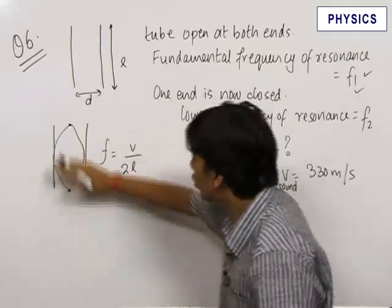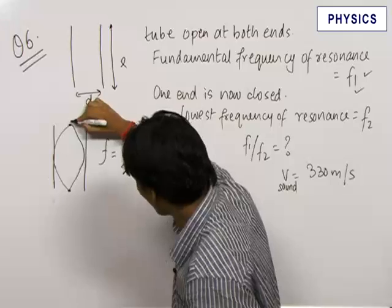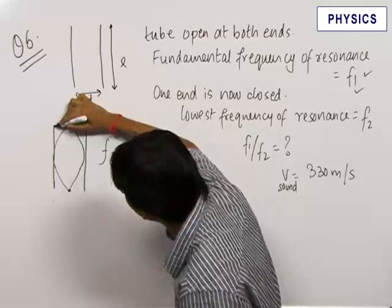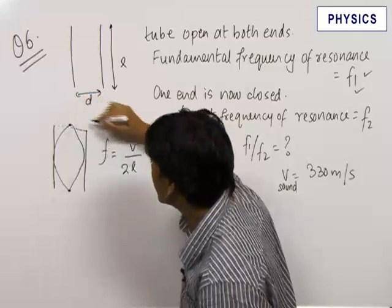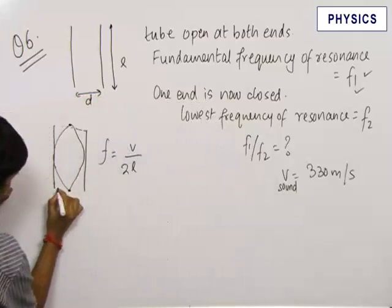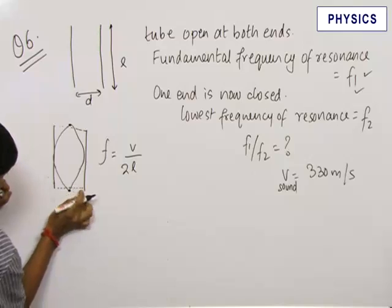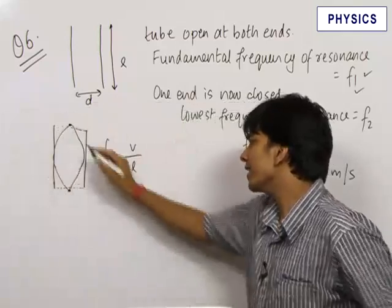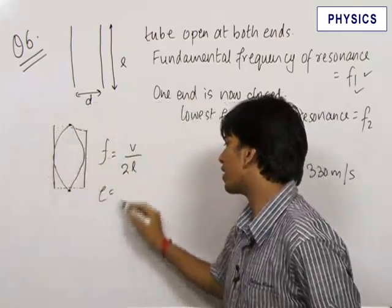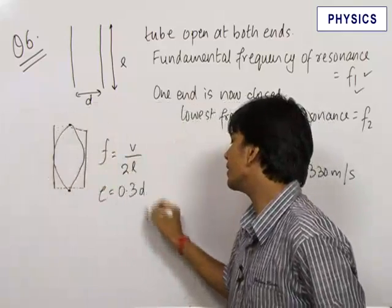What actually happens in an open-ended case is that this node is formed at some distance outside the length of the tube at both ends. The node is formed a bit outside the tube. This is known as edge correction, and the value of edge correction is 0.3D.